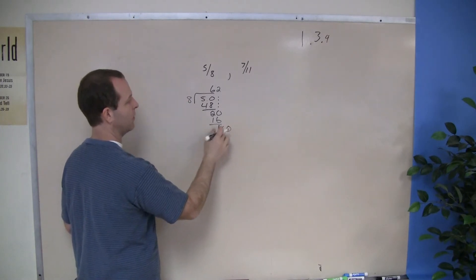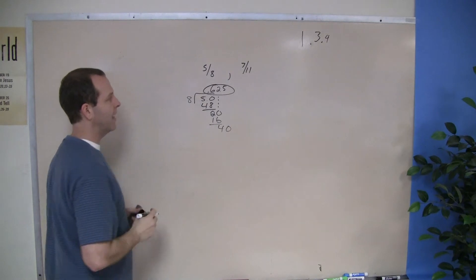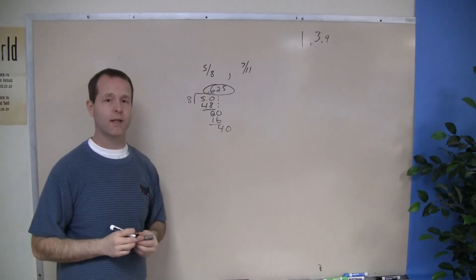Repeat the process, 8 goes into 40, 5 times. So the decimal equivalent of 5/8 is 0.625.